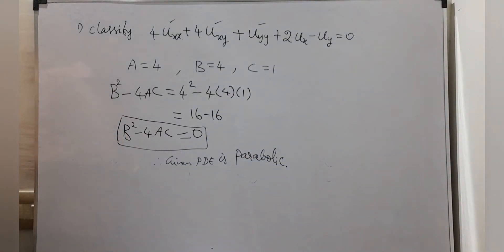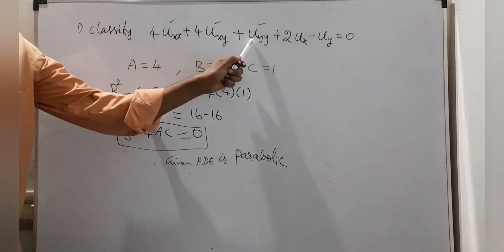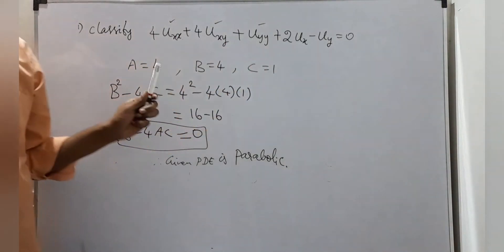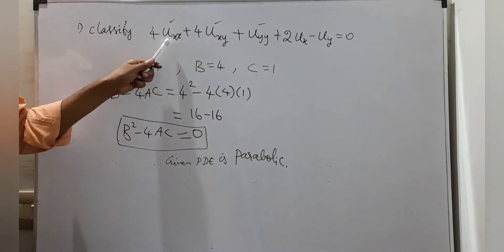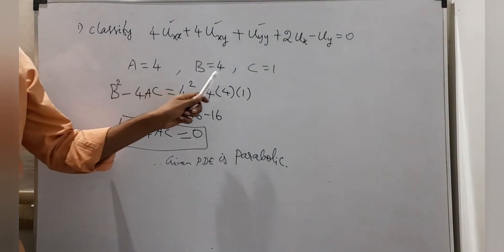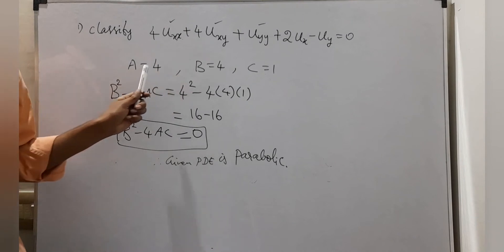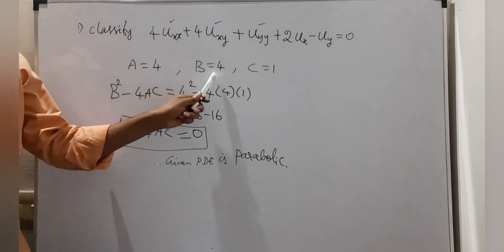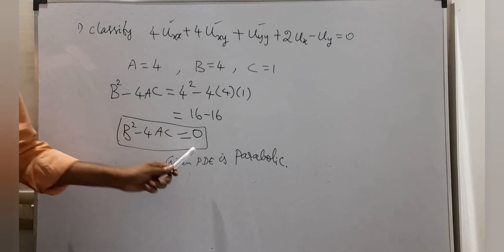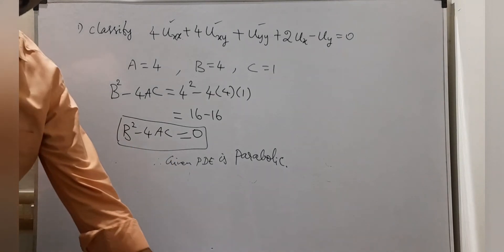So we only need the coefficients of the second derivatives — no need to worry about the other terms. Make sure you have taken the correct coefficients A, B, C; if you make mistakes in A, B, C, you will not get the correct classification.